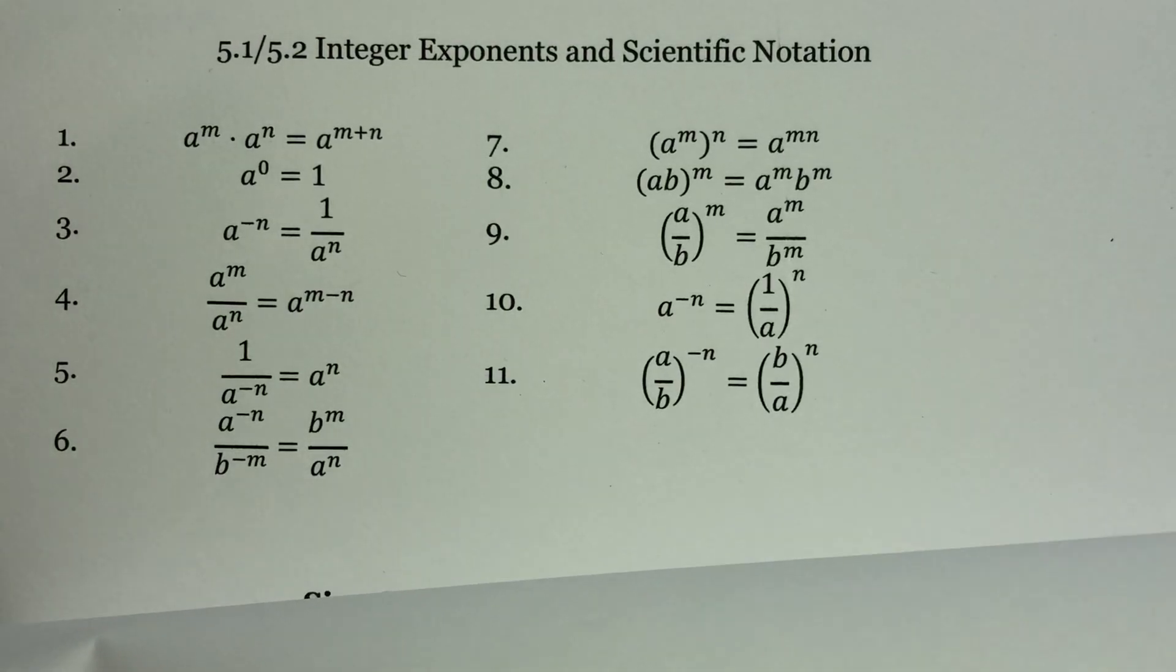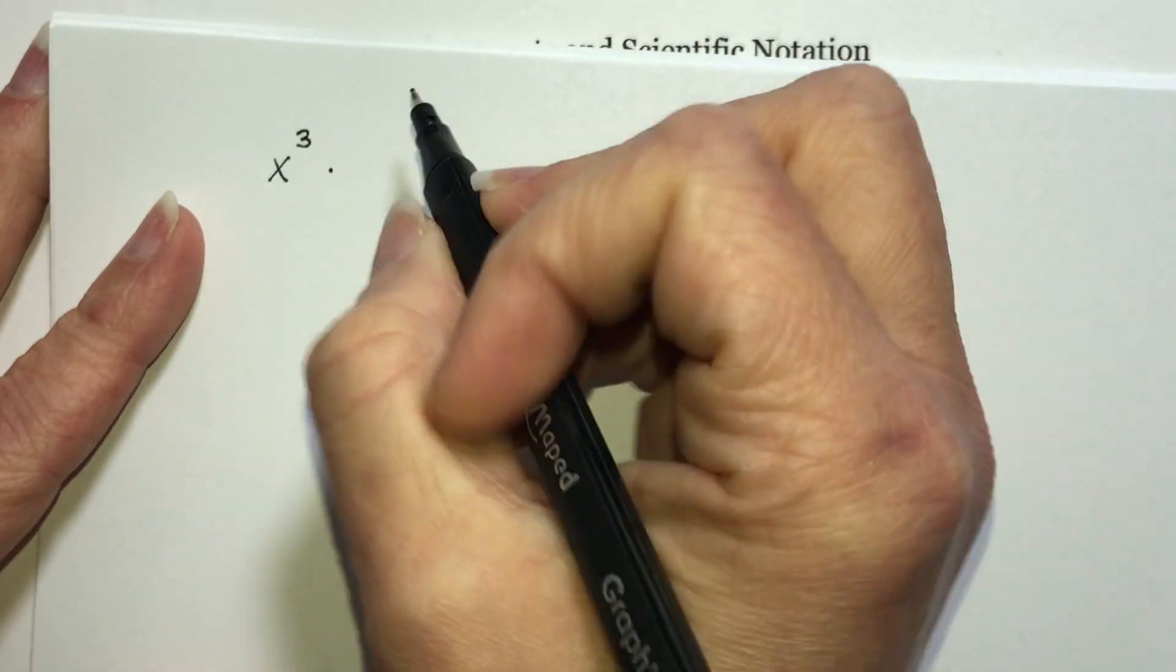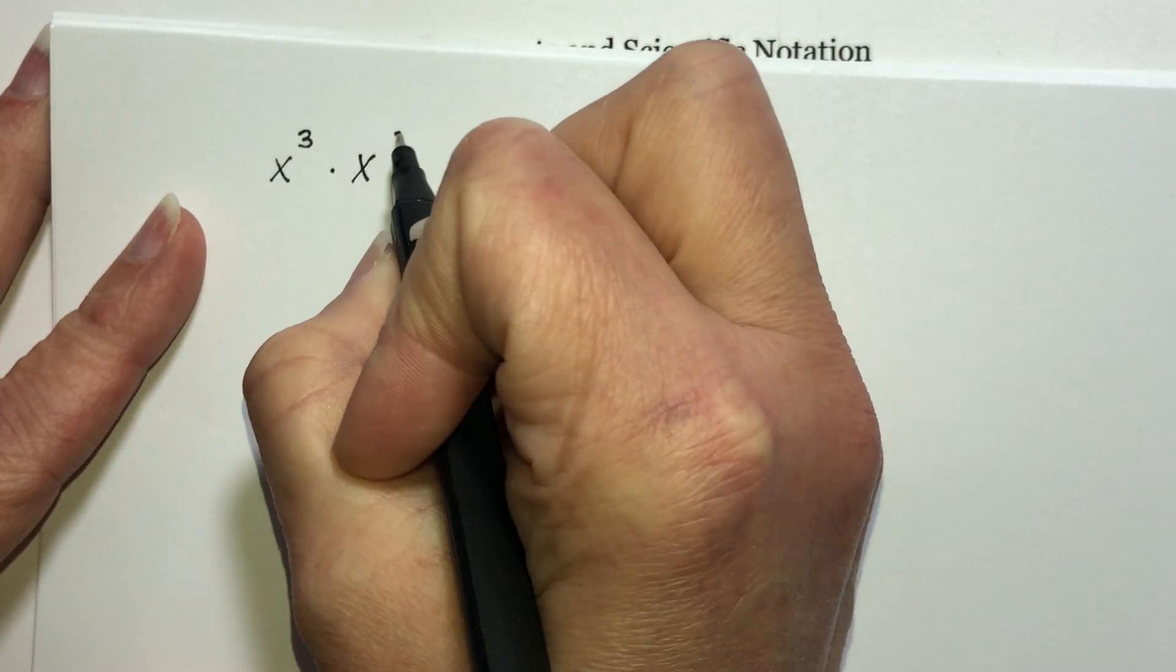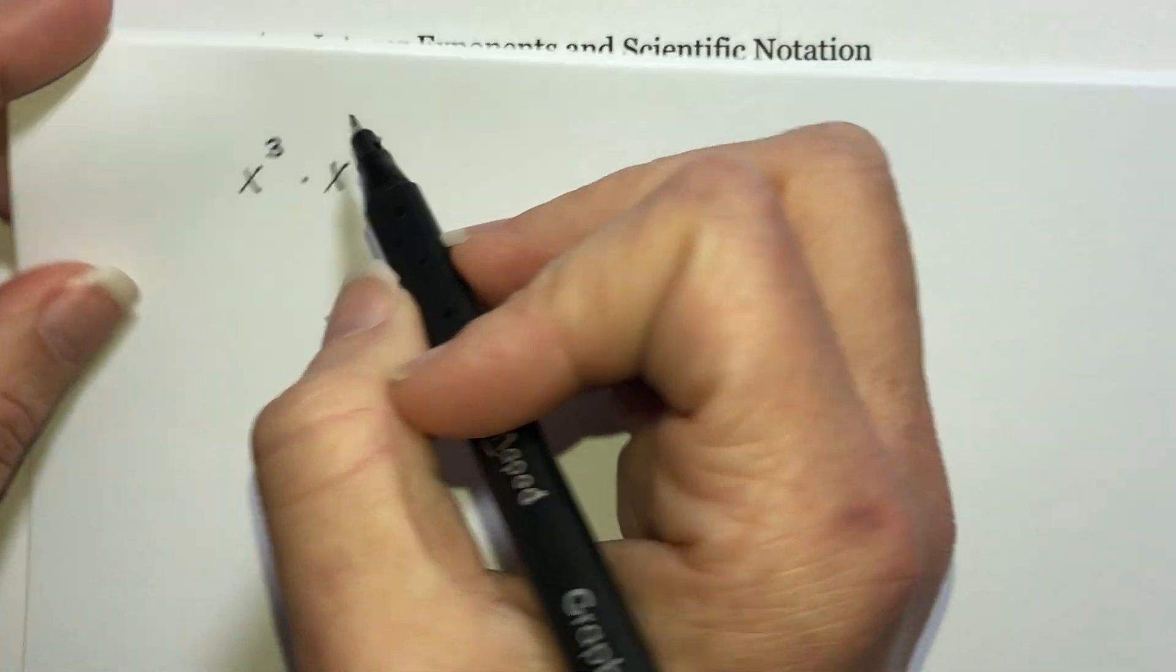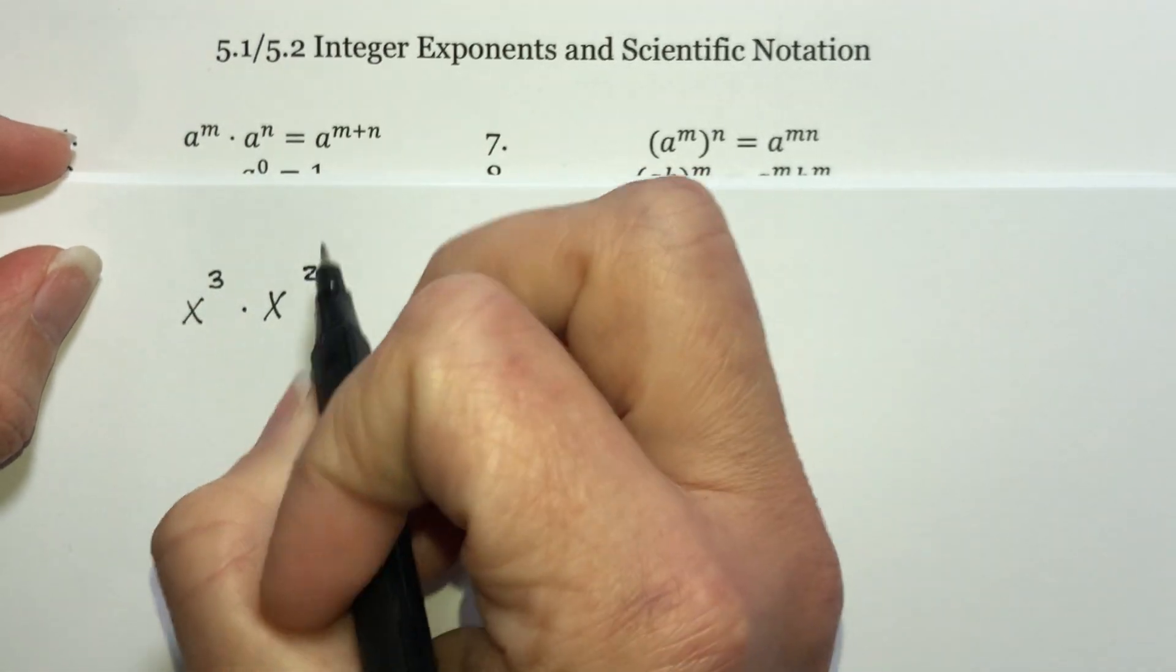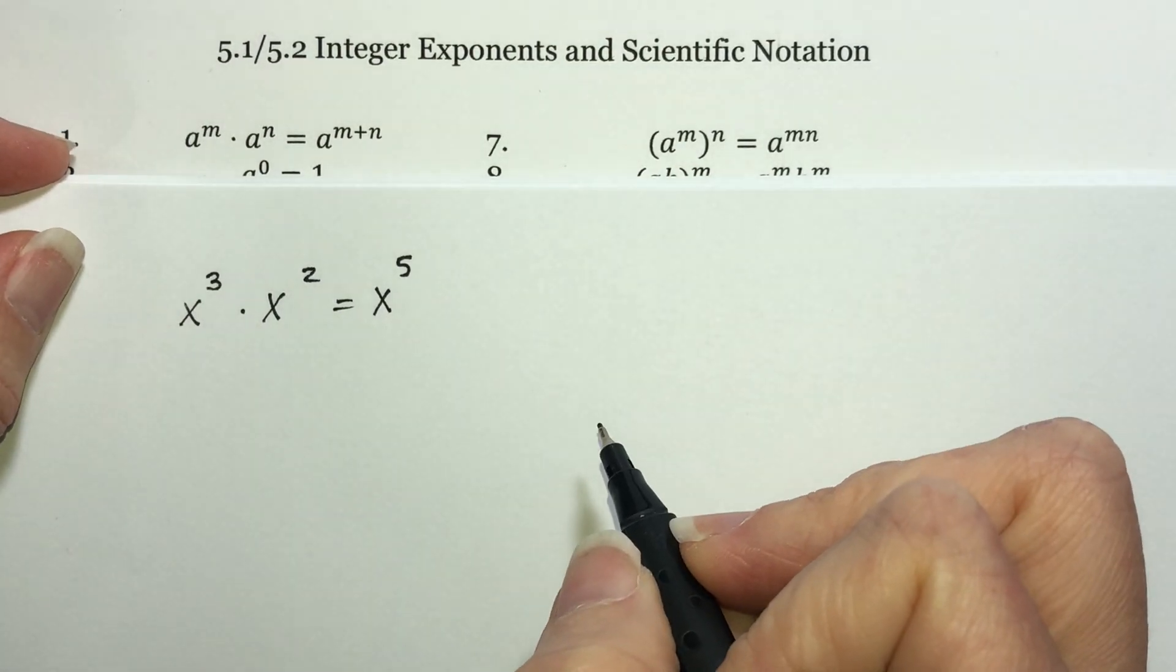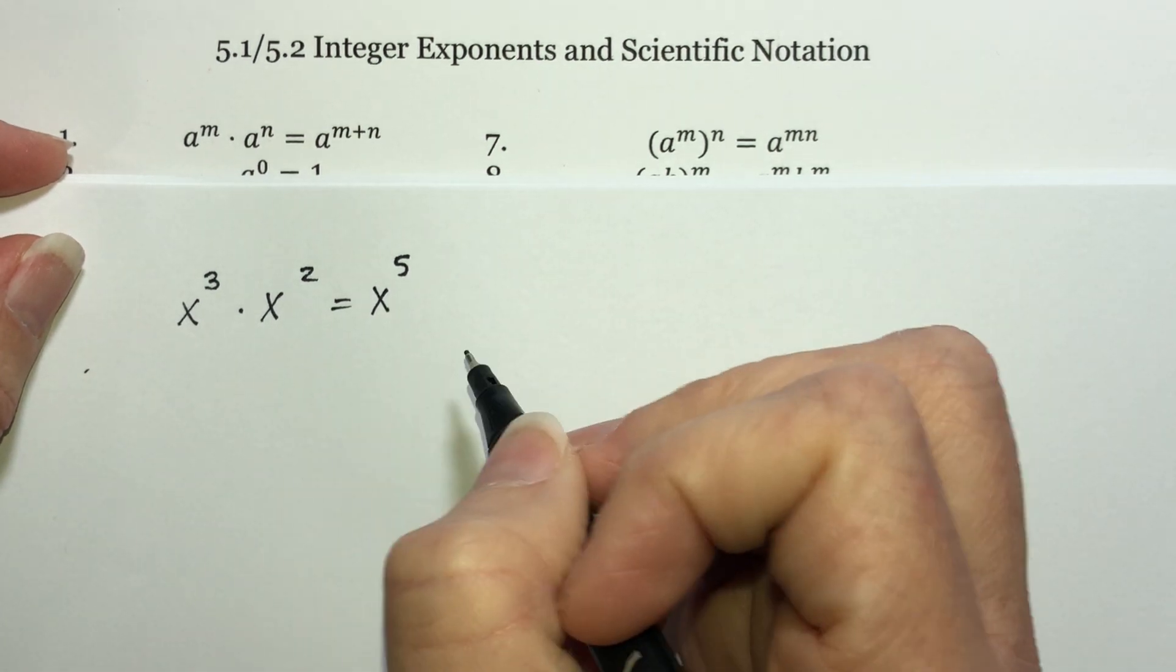So let's say we had x to the third times x squared. If we follow the property here, see we have the same base. It says we should add those exponents to get x to the fifth. So that's just using the property.